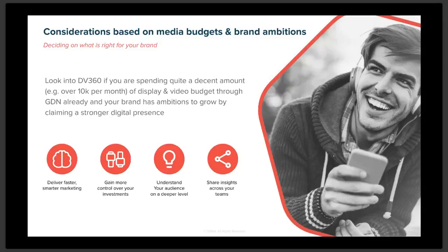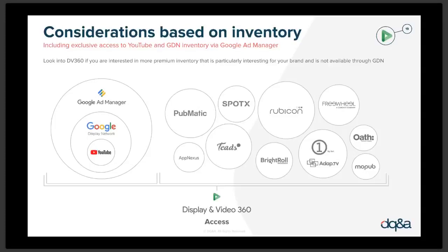Then there are considerations based on inventory. If you're interested in more premium inventory that's particularly interesting for your brand and not yet available in GDN, this is something you can definitely explore. Think about the publishers and inventory you would want to get, and whether it makes sense to upgrade yourself to a platform that can buy that inventory.